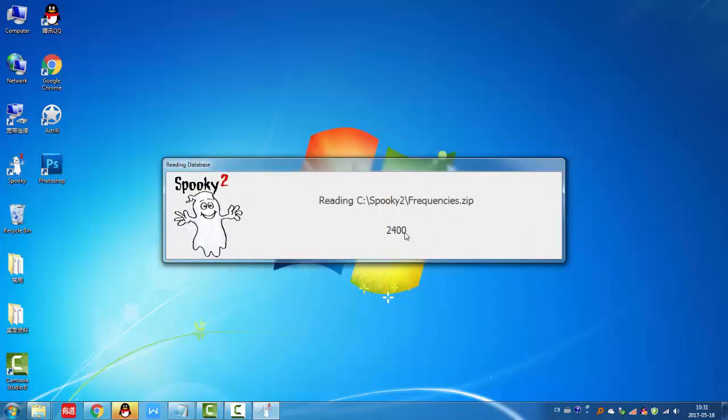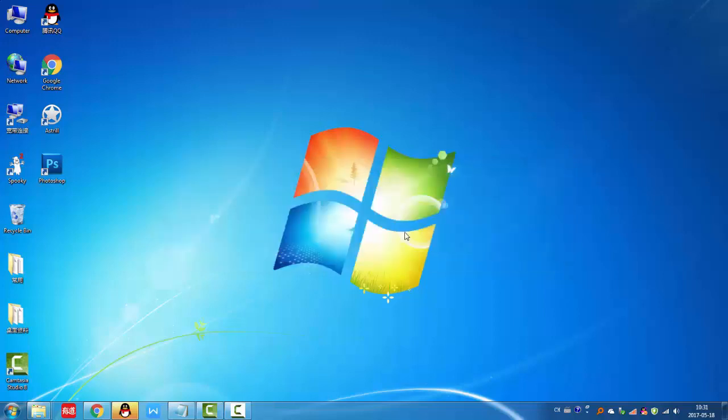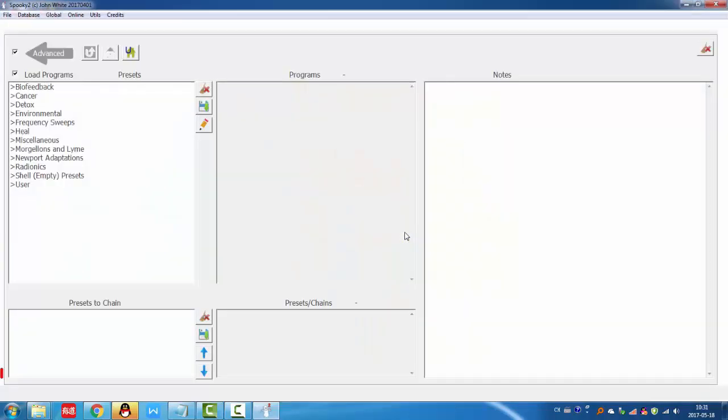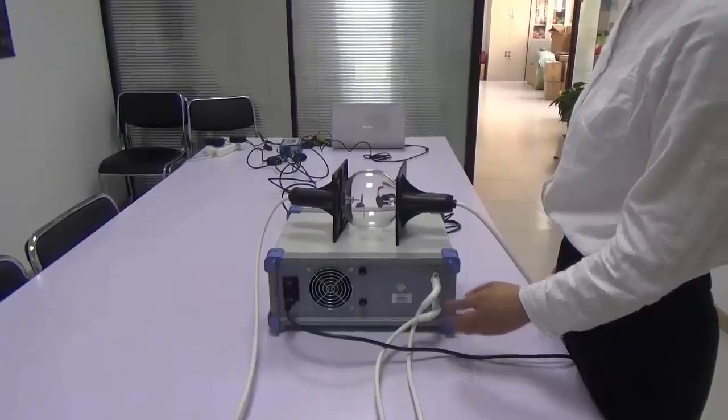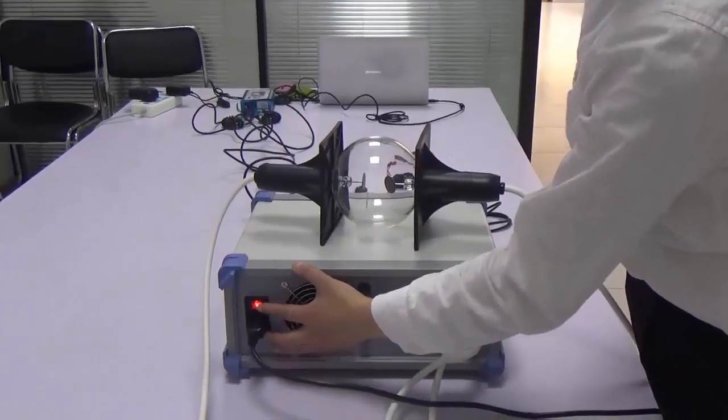The software is reading database now. From GC here, there is a generator detected and now we can turn on spooky central.